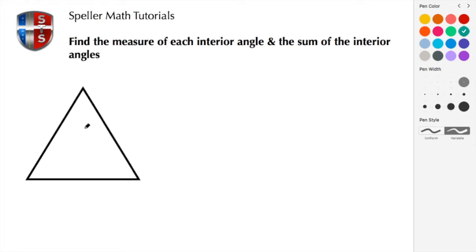So here our regular polygon is a triangle. For this to be considered regular, that means that each one of these sides are the same length or congruent, and each one of these angles are also congruent. What we're tasked to do is find the measure of each interior angle and the sum of the interior angles. There's an expression to do that.